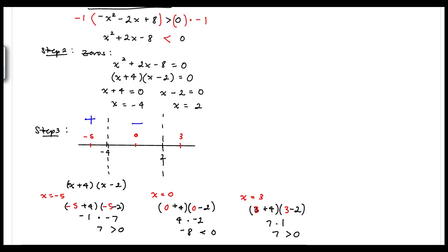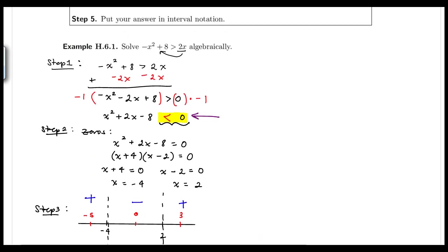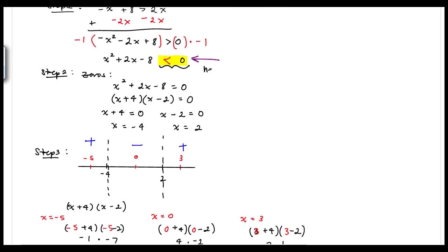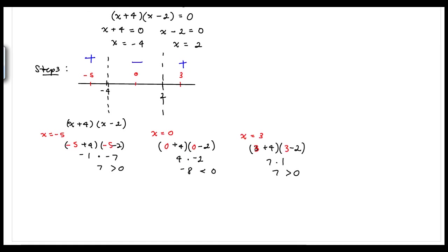We go back to our inequality from step one. After moving 2x over and multiplying through by a negative, our inequality sign switched and we are looking for numbers less than zero. Since the inequality is less than zero, it is true where the test values are negative. The negative region is between negative 4 and 2, meaning numbers to the left of negative 4 and to the right of 2 are not part of our solution.